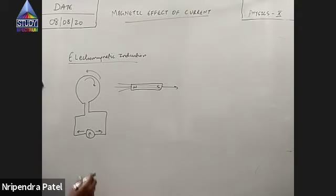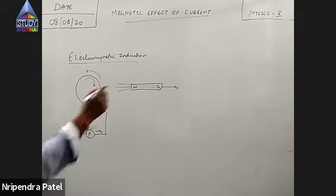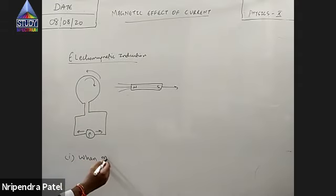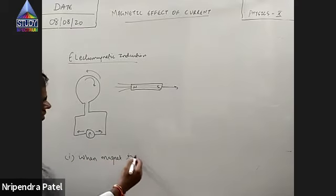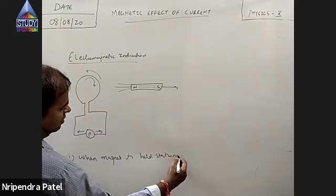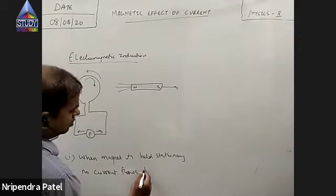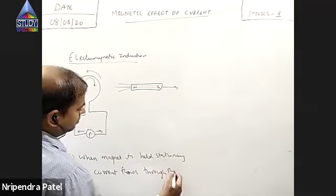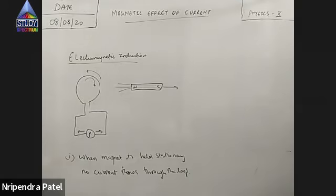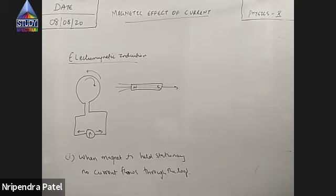So let's write some observations. When the magnet is held stationary, that is at rest, no current flows through the loop. If the magnet is held stationary, no current flows through the circuit.